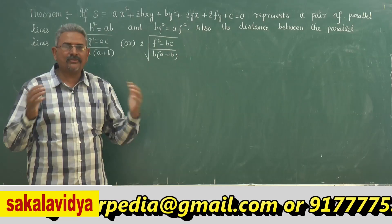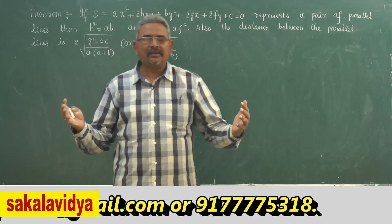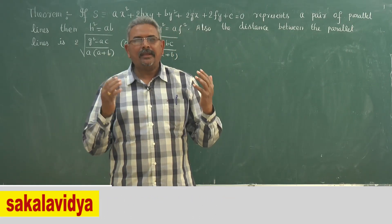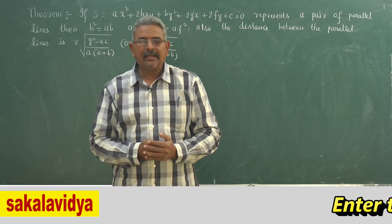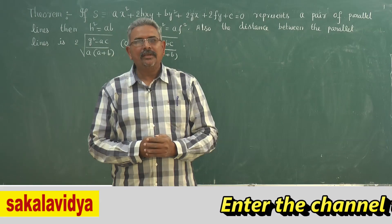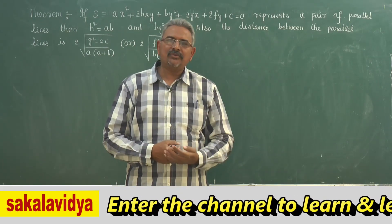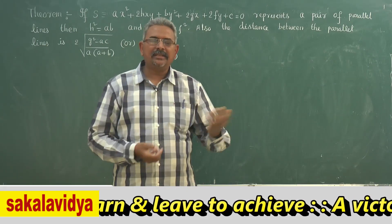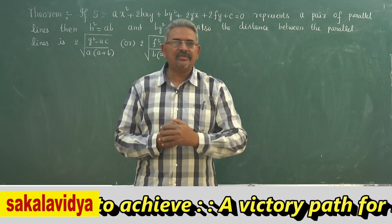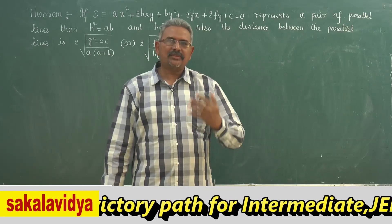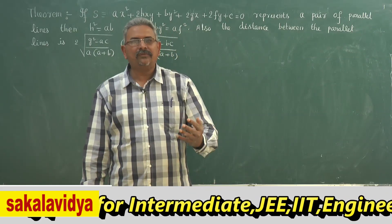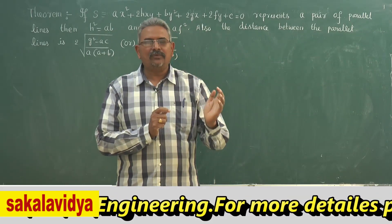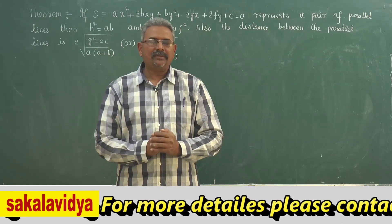First, let us assume the two parallel lines differ only by the constant term, as already studied in straight lines. Let the two parallel lines be Lx + My + N1 = 0 (equation 1) and Lx + My + N2 = 0 (equation 2). Now, Ax² + 2Hxy + By² + 2Gx + 2Fy + C must equal the combined equation of the two lines: (Lx + My + N1)(Lx + My + N2) = 0.